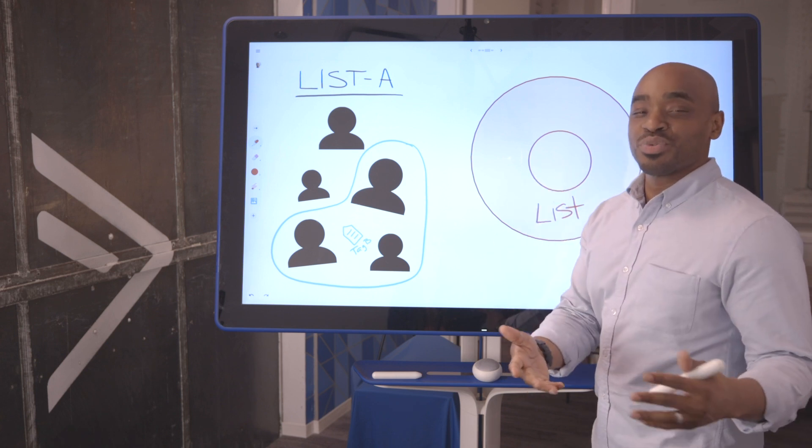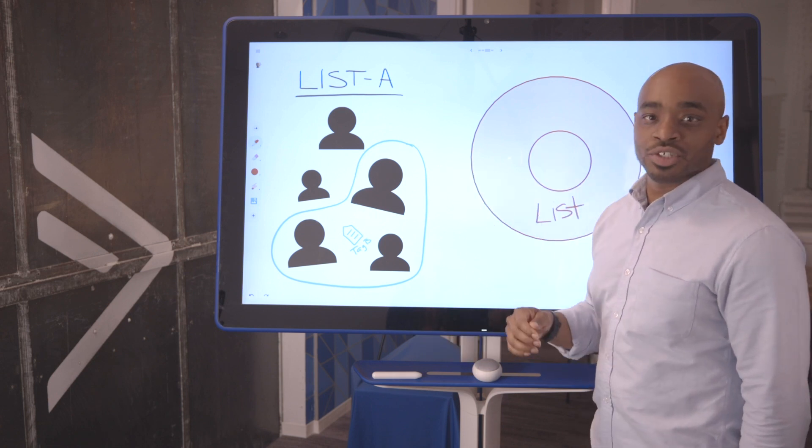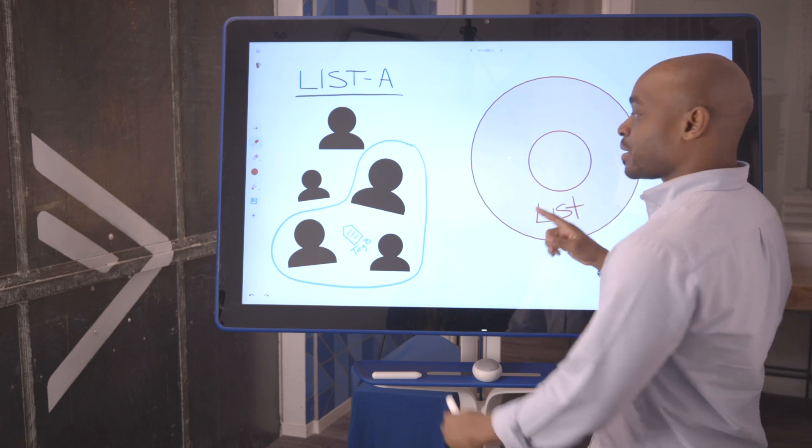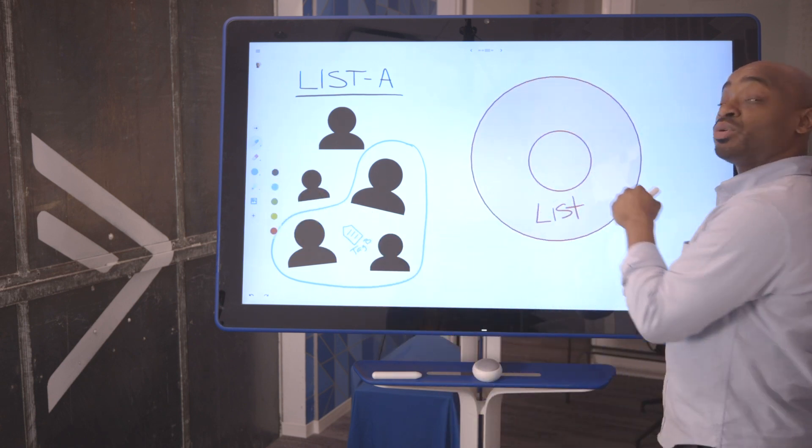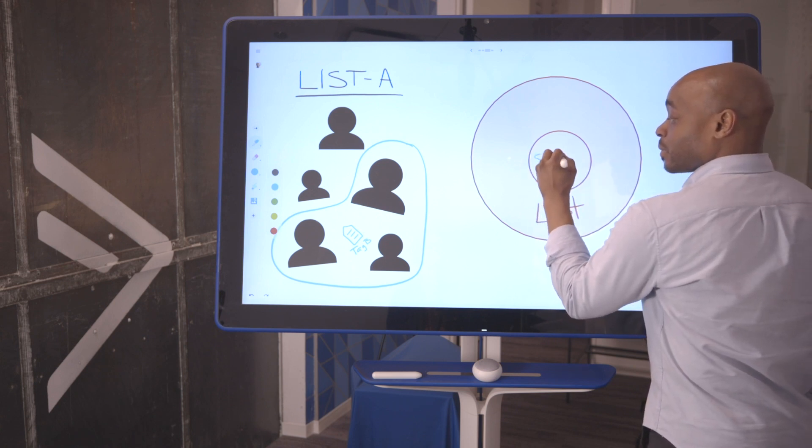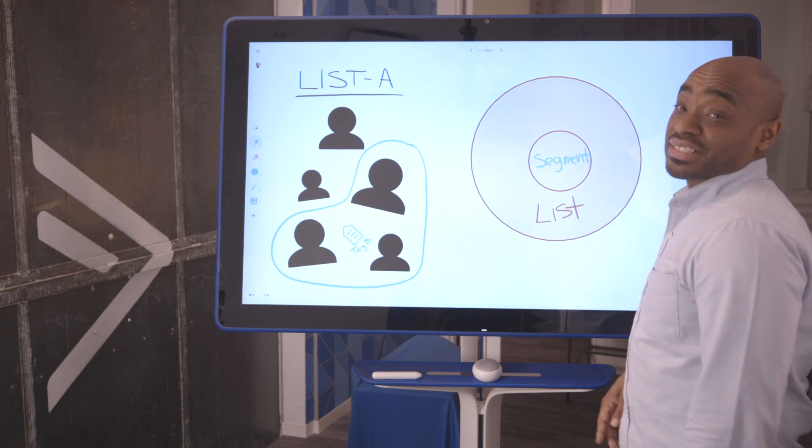So I would submit to you, there's no reason you can't be nailing this bullseye every time you send your messaging. Well, how do we do it? The answer is pretty straightforward. This bullseye is hit by creating segments.